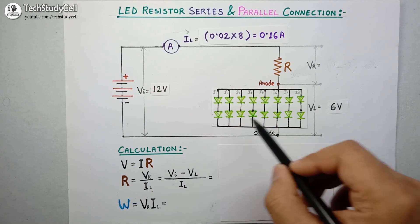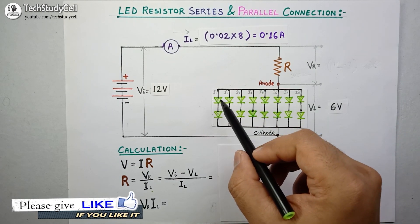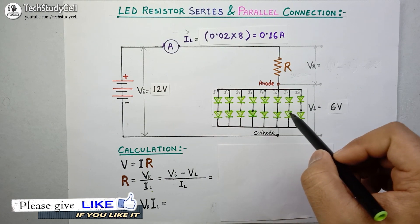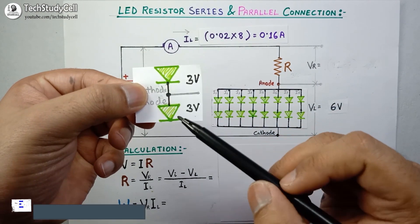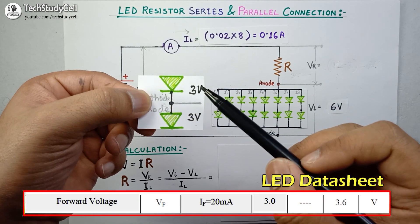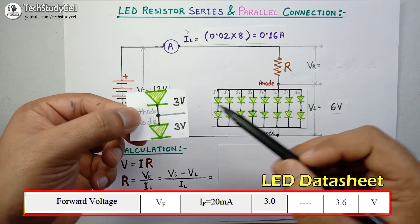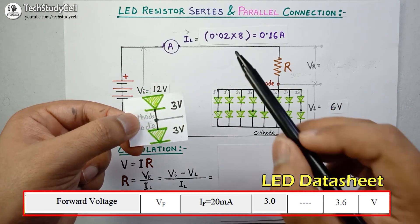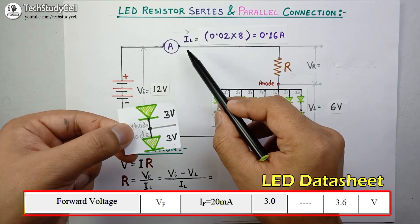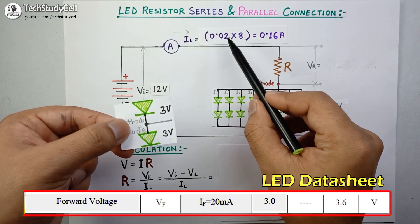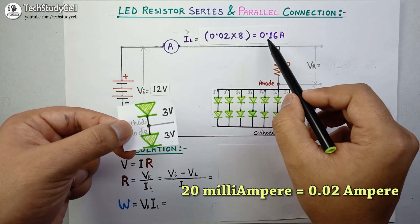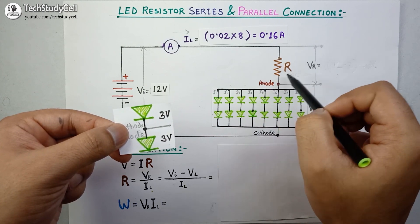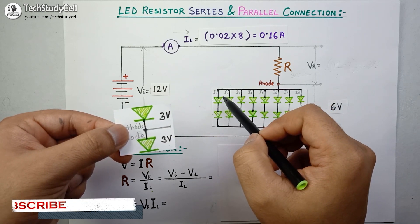In this example we have connected 16 LEDs in a series-parallel combination. There are a total of 8 parallel strings, and each parallel string contains 2 LEDs in series. As the forward voltage of each LED is 3 volts, the voltage drop across each string is 3 plus 3 equals 6 volts. There are 8 strings and each string carries 0.02 amperes, so the total current in the circuit is 0.02 multiplied by 8, which equals 0.16 amperes. So 0.16 amperes will flow through the resistor, and each string will receive 0.02 amperes.